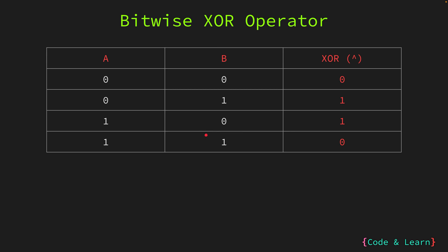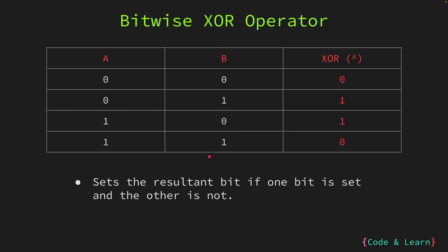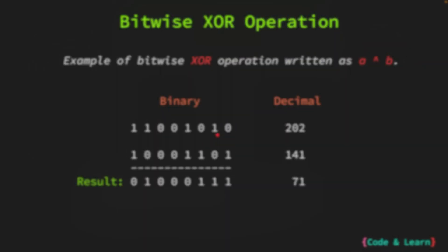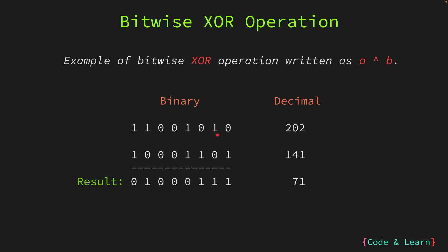By examining the table we can understand the outcomes of the XOR operation for various combinations of two bits. To summarize: the XOR operator sets the resultant bit if one bit is set and the other is not — in simple language, it sets the resultant bit if one bit is 1 and the other is 0. Now let's perform the XOR operation between two binary numbers bit by bit.